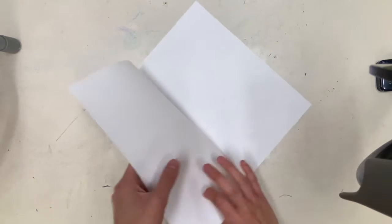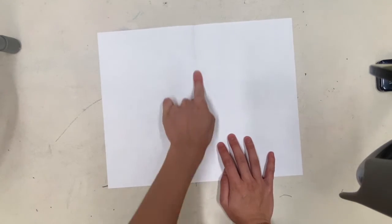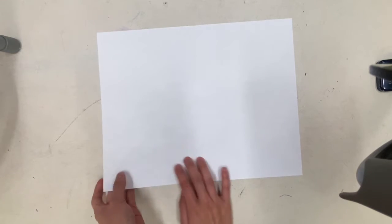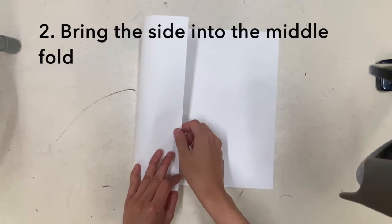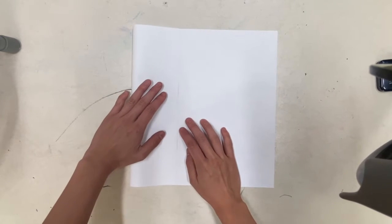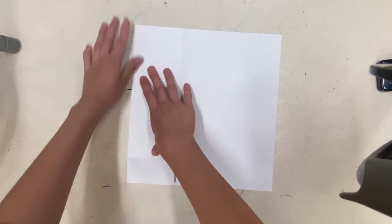I'm going to open up that hamburger fold. Now I have this middle fold, and I'm going to fold the side into the middle like this, match it up to the fold and press down nice and crisp.